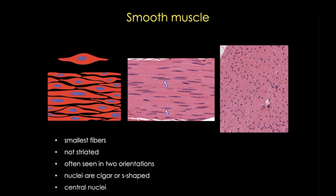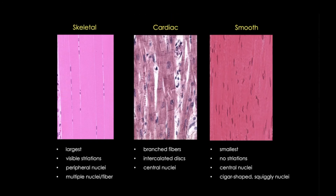Now let's quickly recap the differences among our three types of muscle. Skeletal muscle has the largest fibers, visible striations, and multiple peripheral nuclei. Cardiac muscle has branched fibers and prominent intercalated discs, while smooth muscle has the smallest cells with cigar-shaped or almost squiggly looking nuclei. I hope these tips will help you solve this case of mistaken identity. Thanks for stopping by.